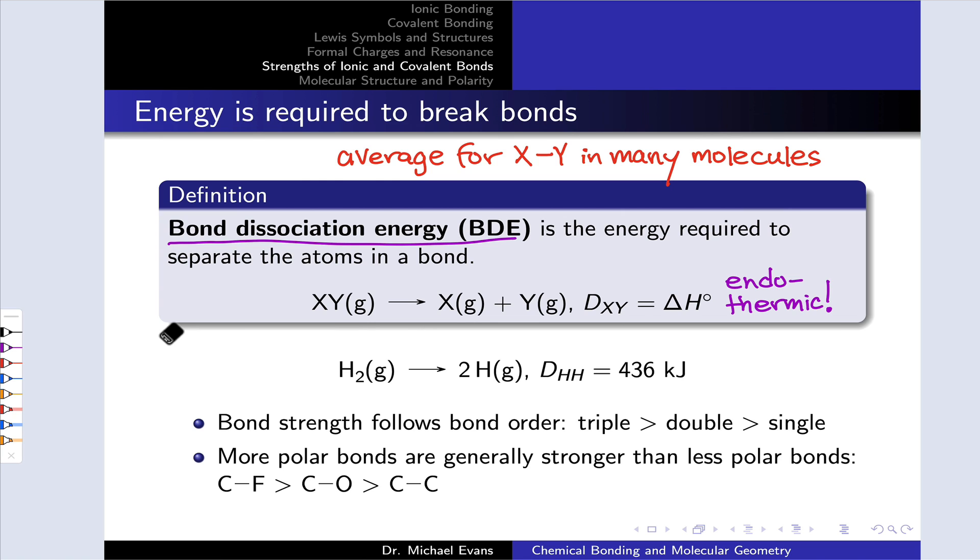The same is true of any covalent bond. So the numbers that you'll see tabulated in tables where a single number is given, for example, for an O-O or a C-H or an N-O bond, let's appreciate that these are averages over those bond energies, bond dissociation energies, for many molecules.